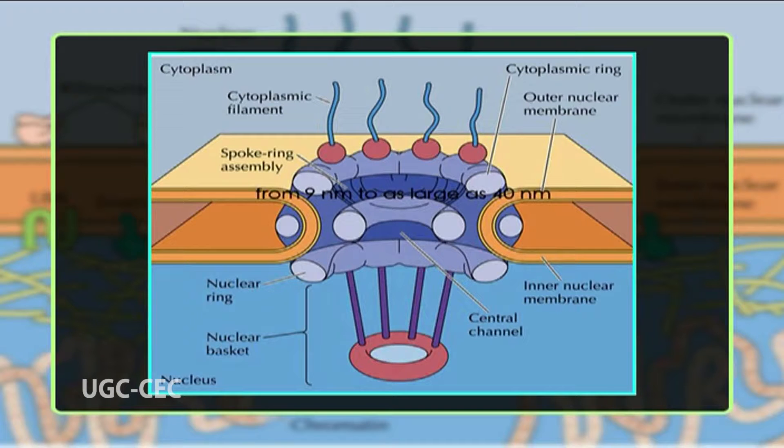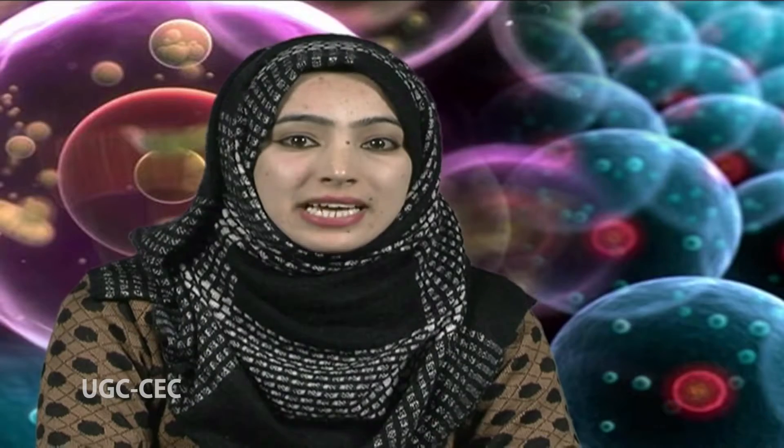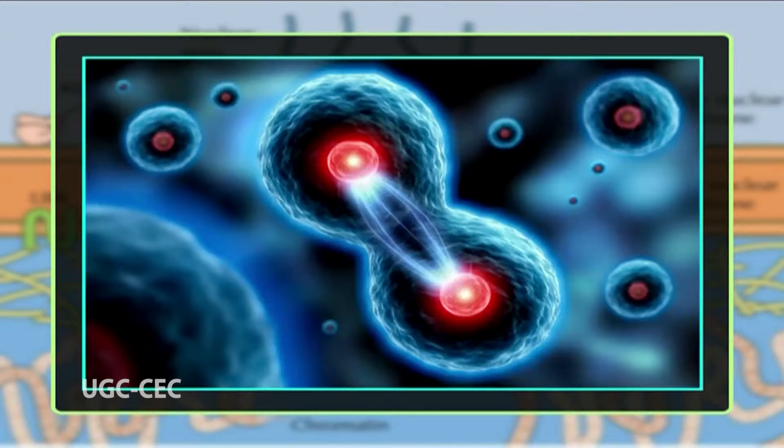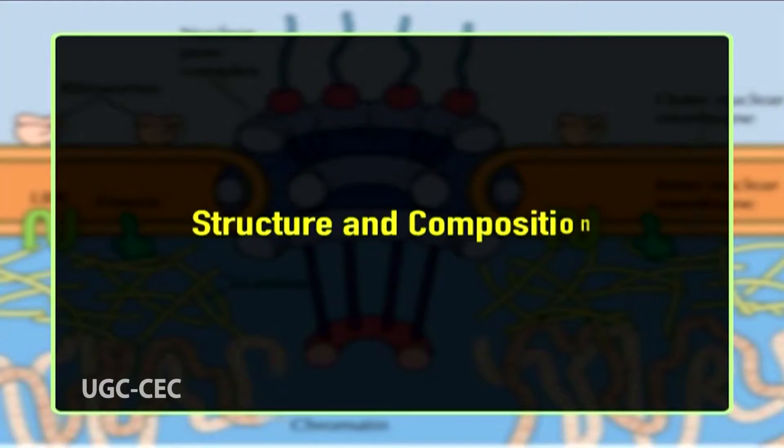The nuclear lamina is a dense fibrillar network inside the nucleus of most cells. It is composed of intermediate filaments and membrane-associated proteins. Besides providing mechanical support, the nuclear lamina regulates important cellular events such as DNA replication and cell division. Additionally, it participates in chromatin organization and anchors the nuclear pore complexes embedded in the nuclear envelope.